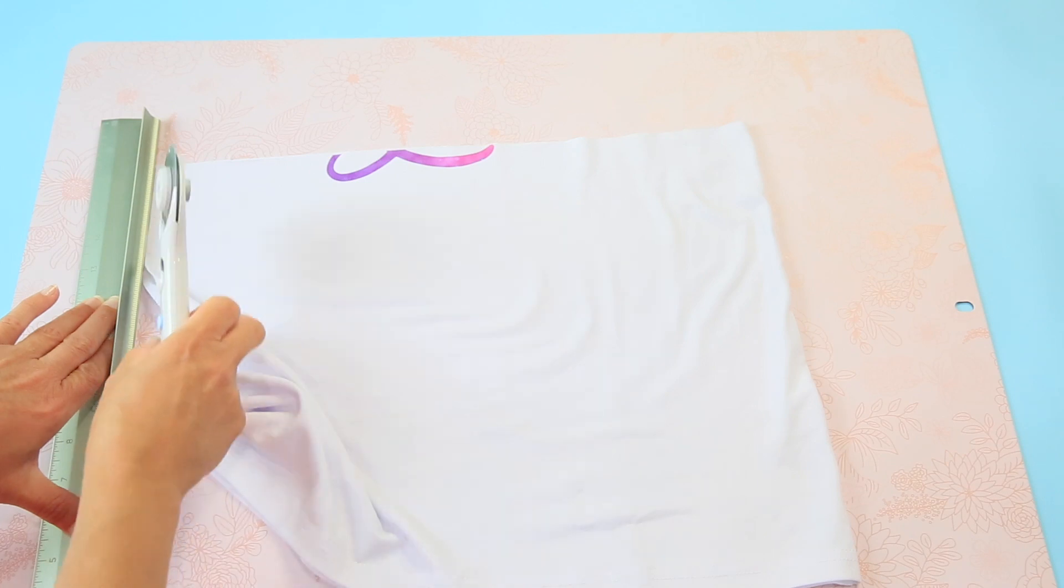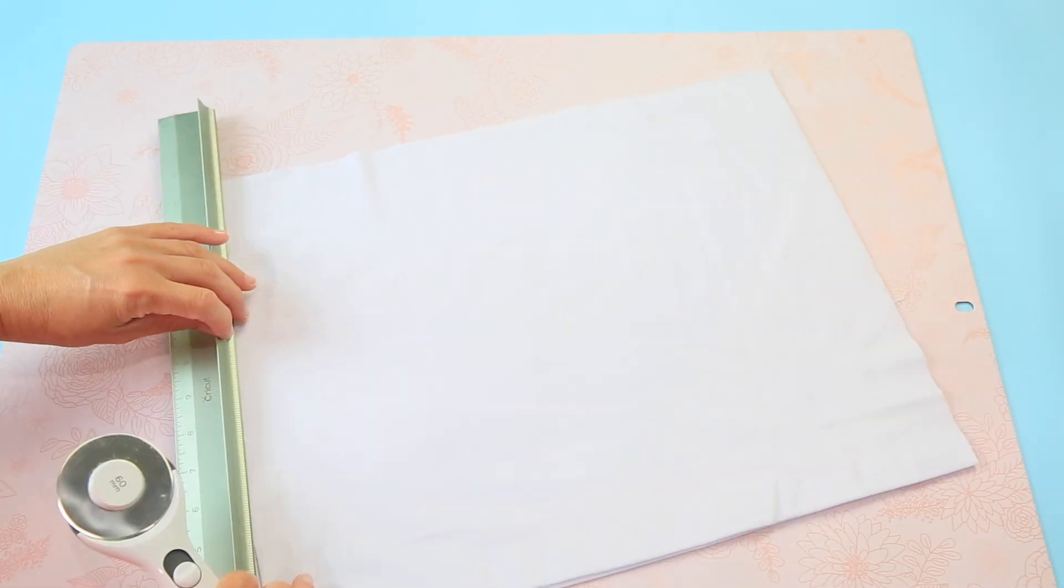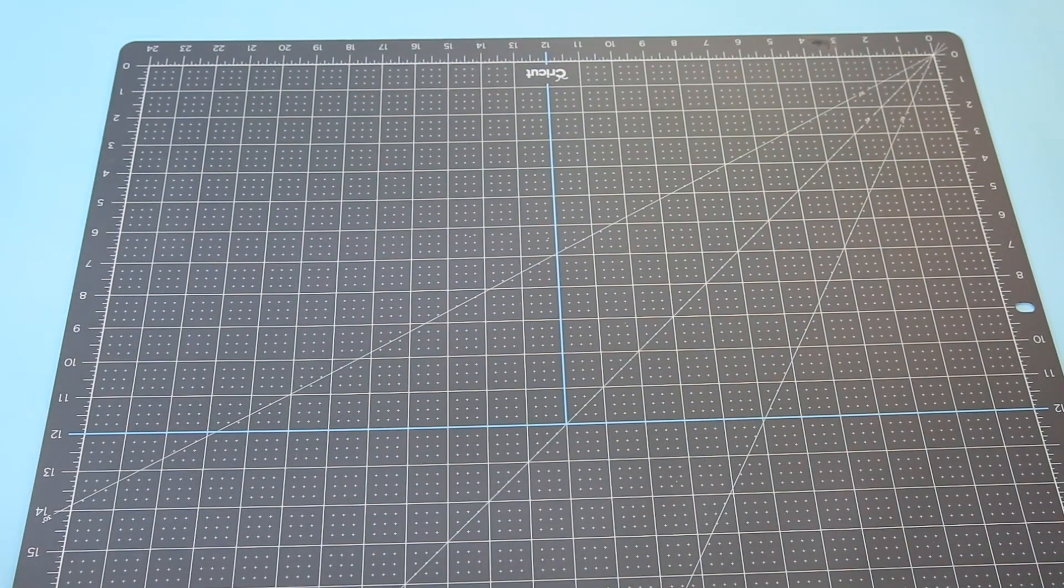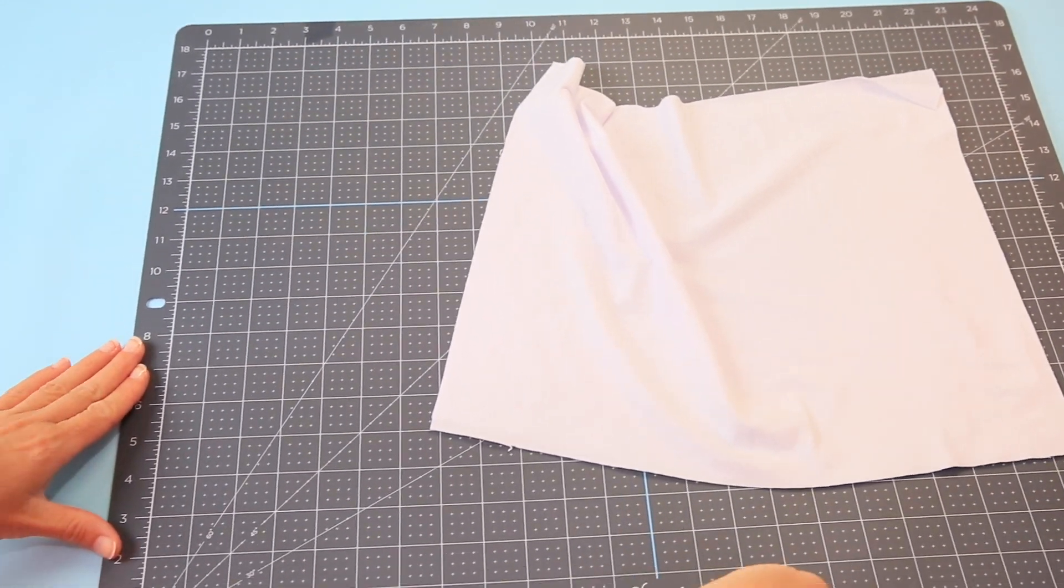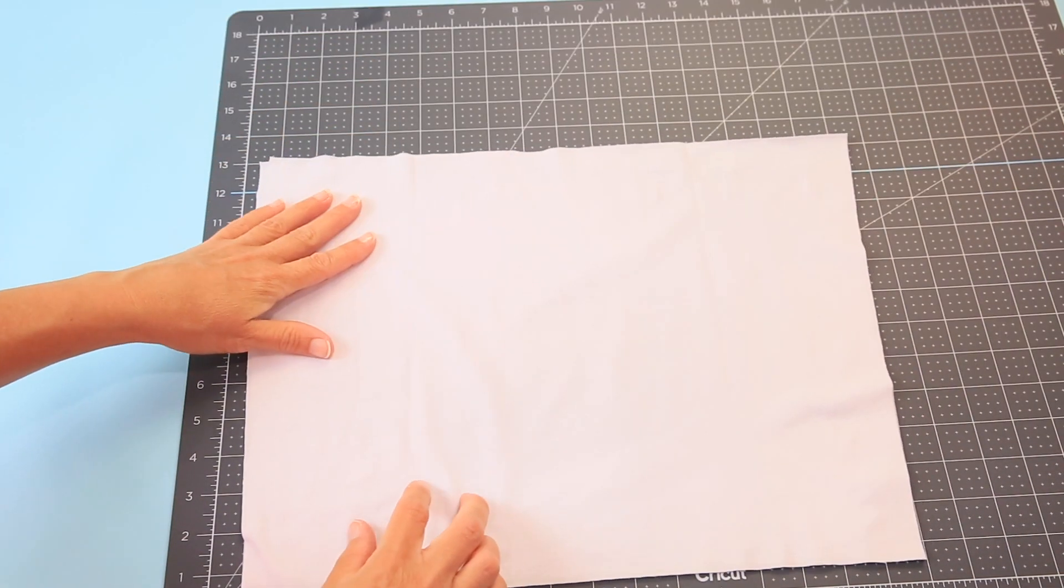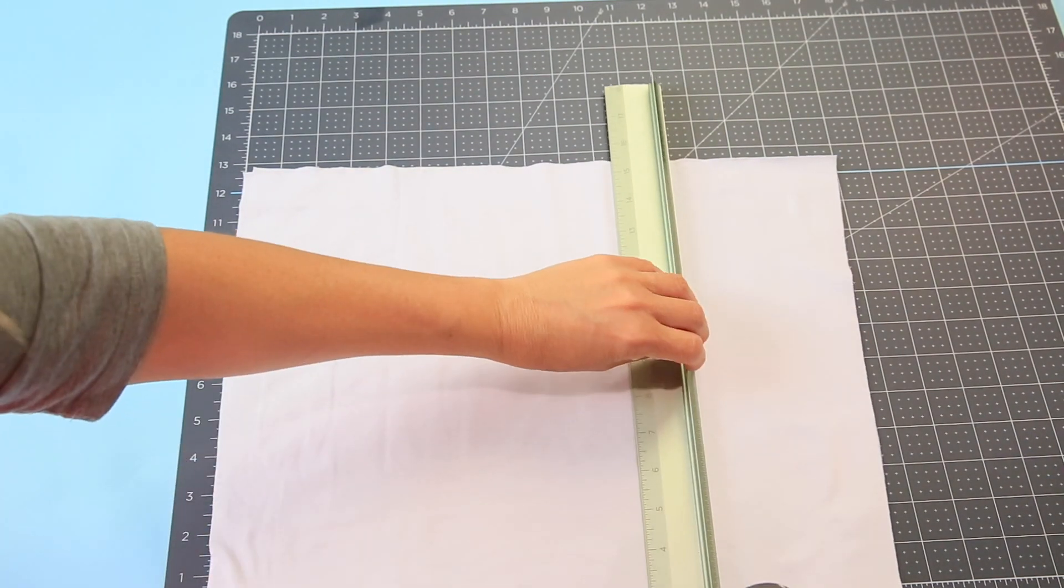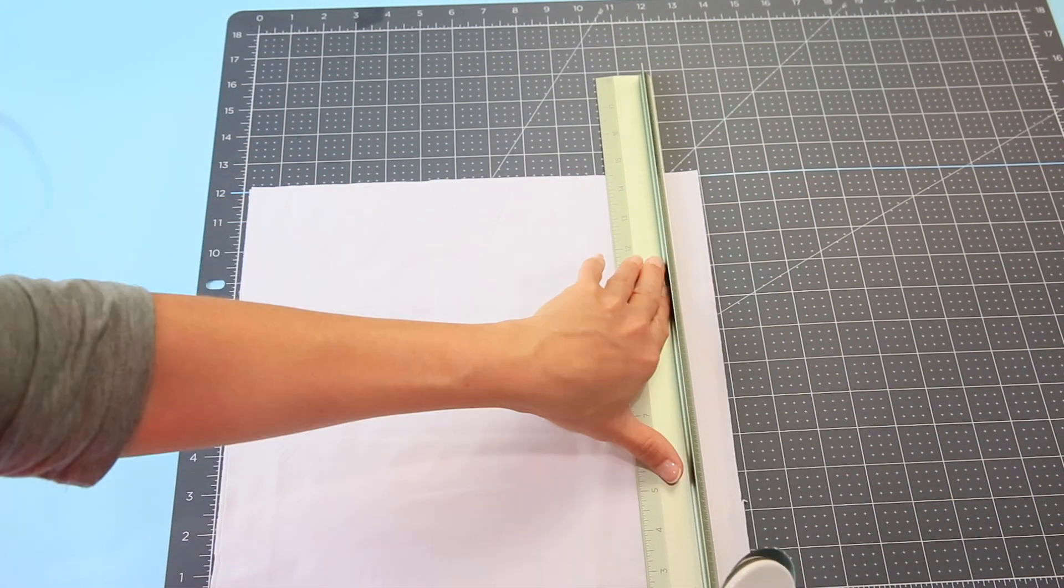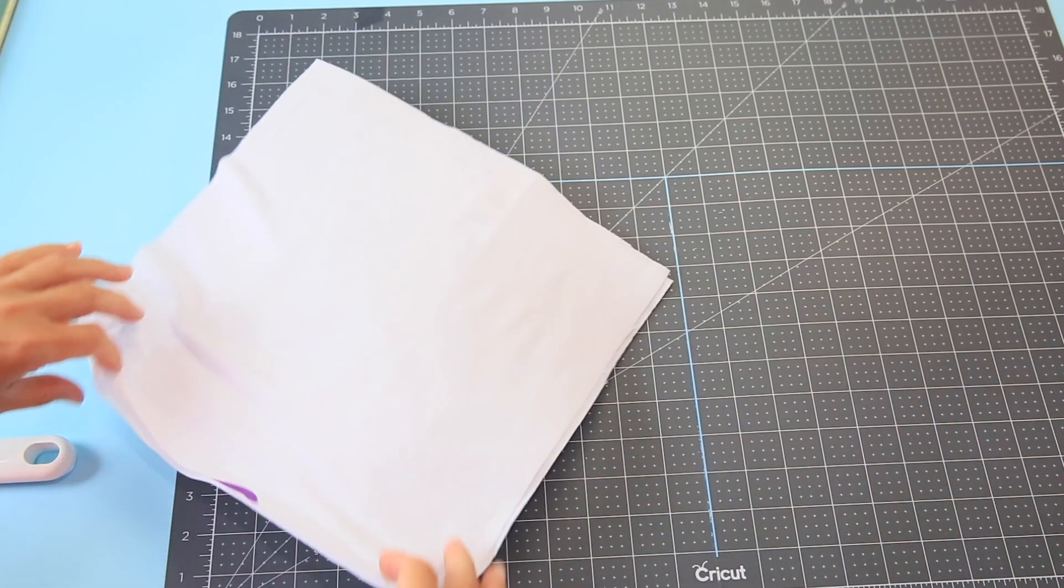And by the way I'll put links to all of these down in the description below in case you don't have some of these materials and you would like to have them. Okay so now I'm actually going to flip my mat over. This is my self-healing mat and this is just going to make it a whole lot easier to cut a 12 by 12 piece. Okay so that it fits on our mat. Okay so now we have two pieces of fabric from the same t-shirt to make two masks.